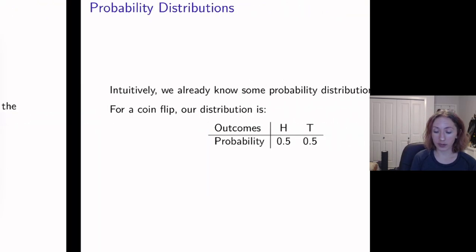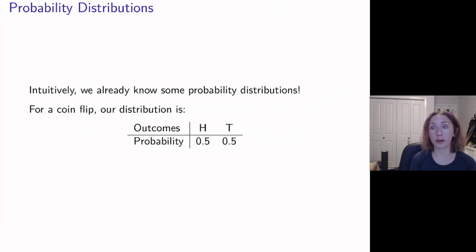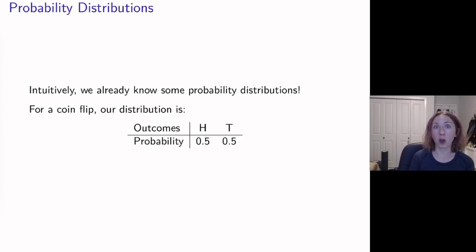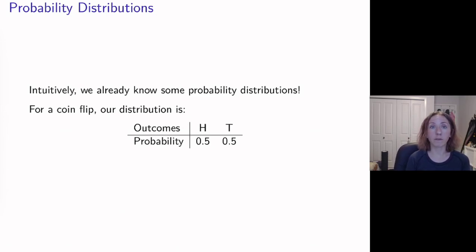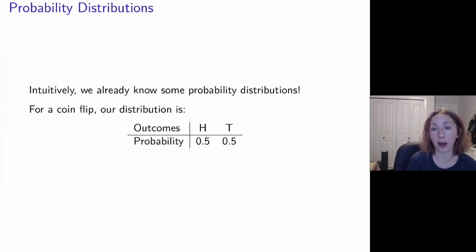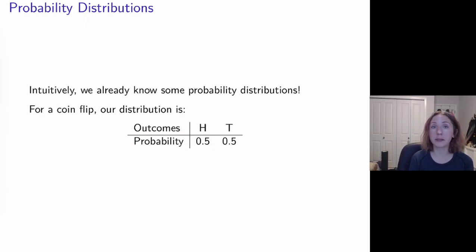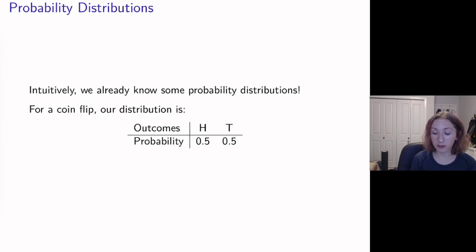Now there are some of these that we already know. For very basic, kind of contrived probability things like coin tossing and dice rolling, we know how those work. So if we're looking at flipping a coin, our probability distribution we could represent like a table. Our outcomes could be a head or a tail, and both have equal chance of happening, so it's 50/50. When everything is equally likely, every outcome just has one over the number of things as its probability.